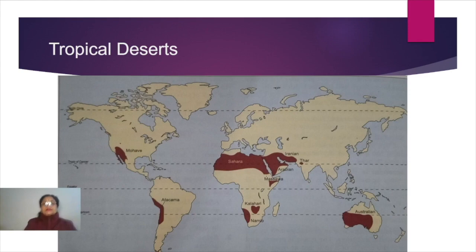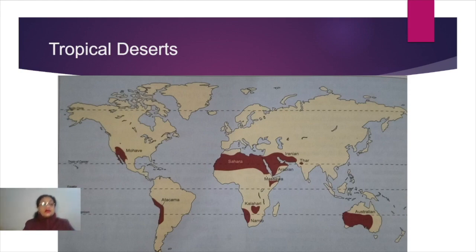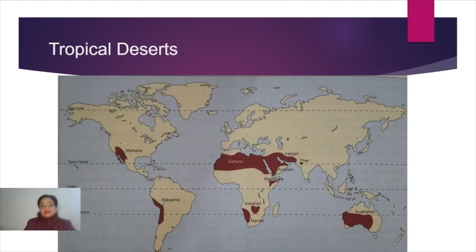Besides this, a few local winds are also experienced in these desert areas. These local winds include Mistral, Gora, and Sirocco — these are the winds which blow in such desert areas.